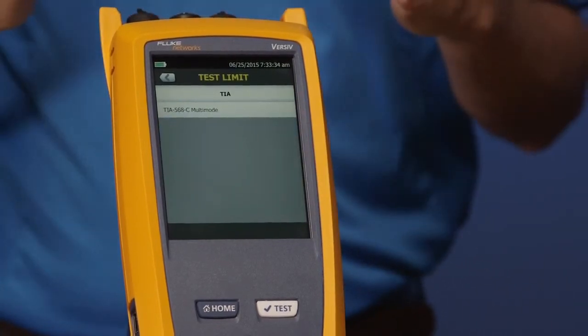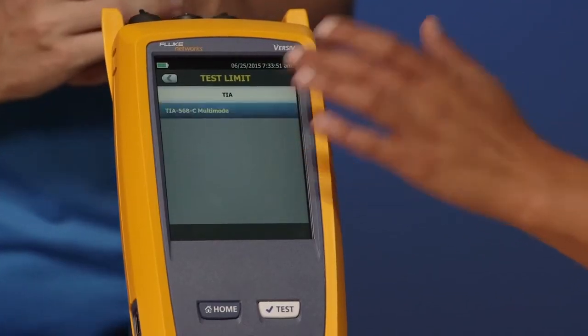And because we selected a multi-mode cable, we get a multi-mode option. If you wanted the TIA option for single-mode testing, first select a single-mode cable, and then you would get that single-mode option here on the test limit. So we're going to use the TIA 568C multi-mode. Go ahead and tap that for me.